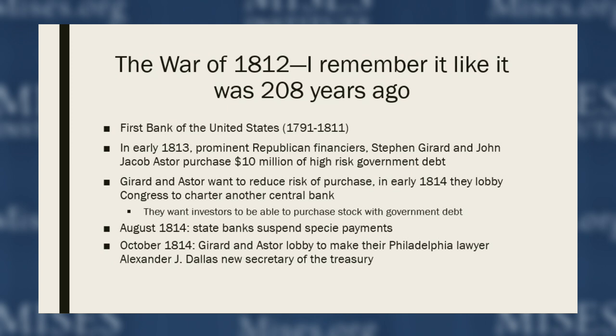The United States wasn't doing as well as expected in the war, so the yields on that debt were very high and prices were low because an entrepreneur buying it would be taking on a lot of risk — there was a chance the government would default. Purchasing high-risk debt isn't necessarily an act of cronyism, but what makes this especially cronyish is that they wanted to reduce the risk of the purchase. They basically lobbied Congress to charter another central bank, because similar to the First Bank, you could purchase stock by exchanging government debt, making that debt more marketable and boosting its price.